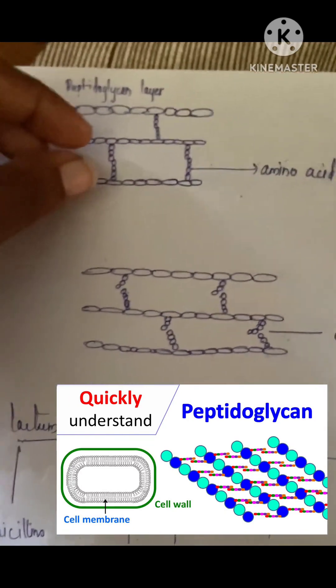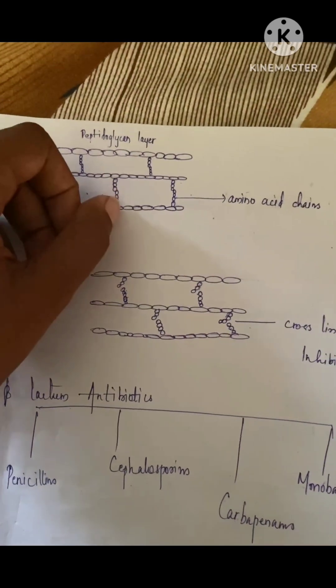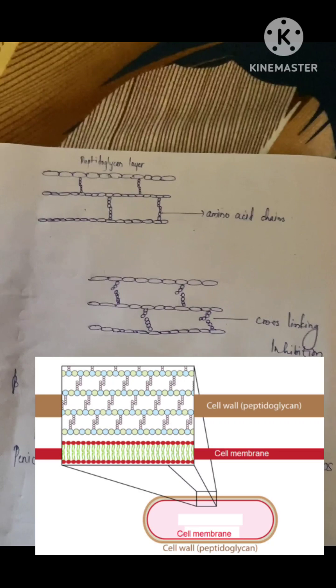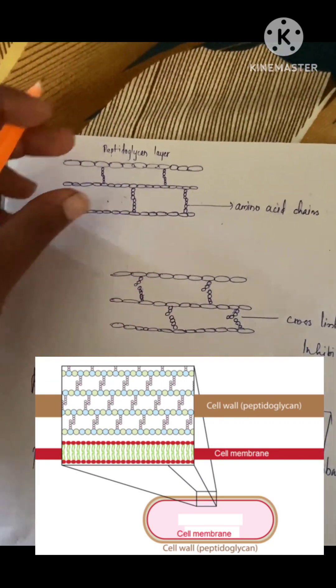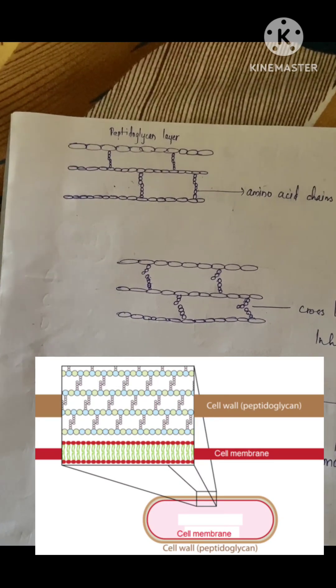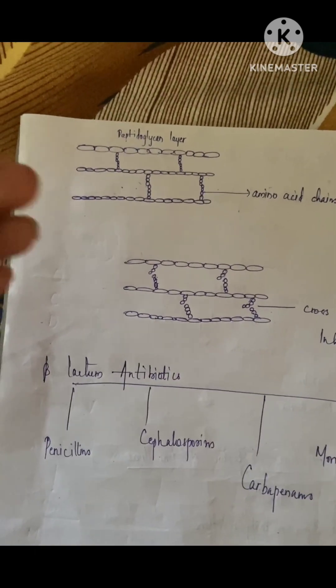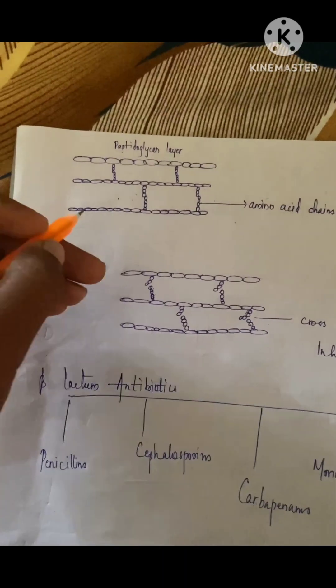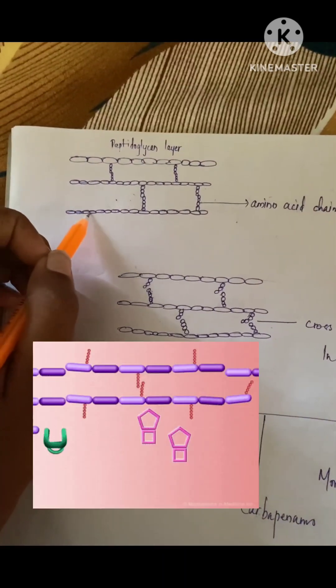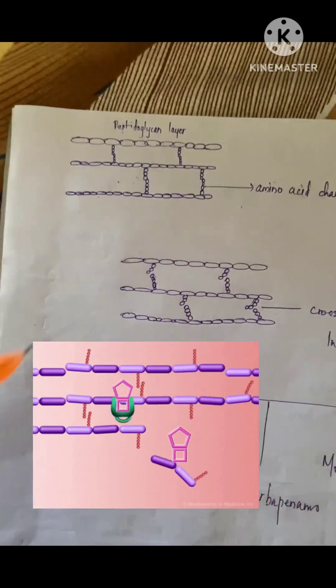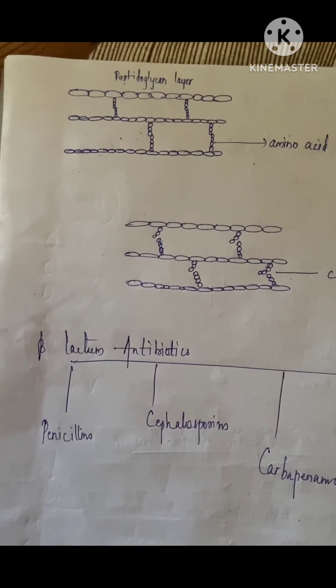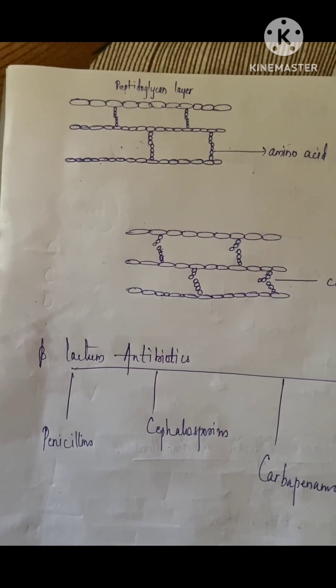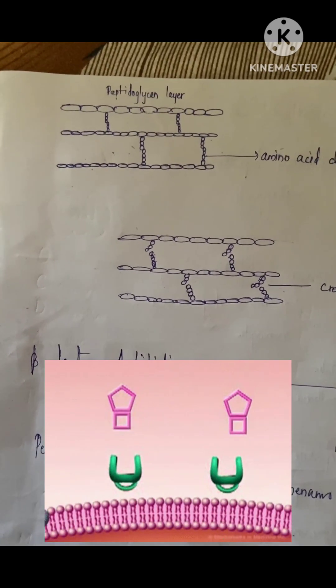The peptidoglycan layer is bound by amino acid chains to maintain the cell wall. What penicillin does is bind to a protein called penicillin binding protein, or PBP.